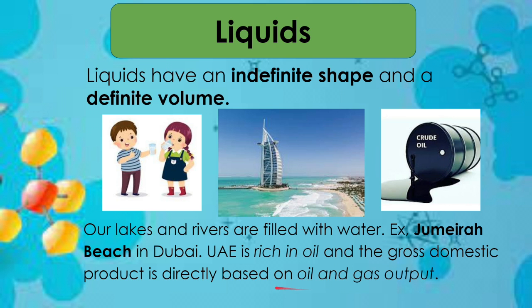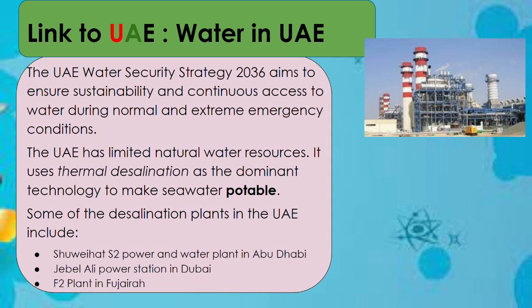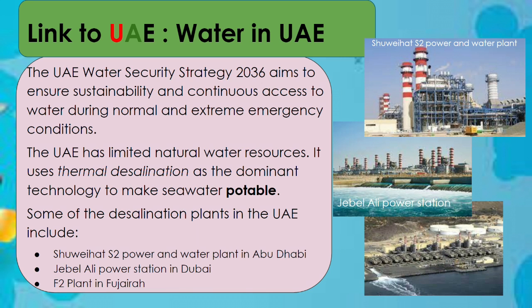The UAE's gross domestic product is directly based on oil and gas output. In what ways does water shape life in the UAE? Water is very important there — about half of the annual water production from all sources is used for irrigation of green spaces and agriculture. The other half is used for domestic uses like cleaning, cooking, and drinking. The UAE's Water Security Strategy 2036 aims to ensure sustainability and continuous access to water during normal and emergency conditions.